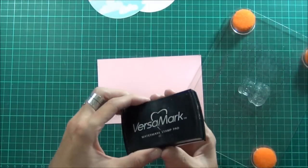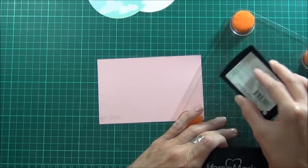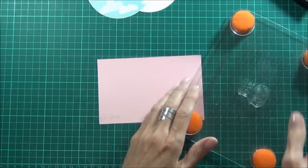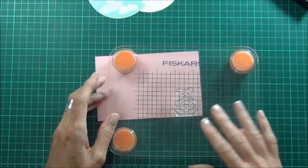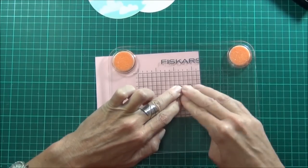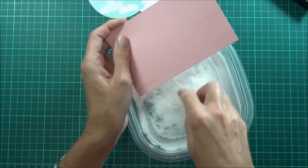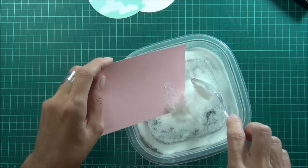So I've got some Versamark ink. And this one's American Crafts Blush cardstock. So I'll just stamp that on there. See if that worked. I want some white embossing powder.